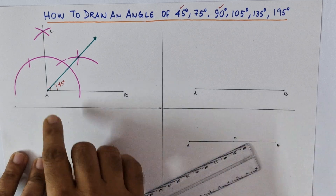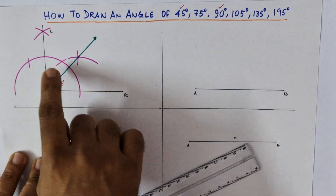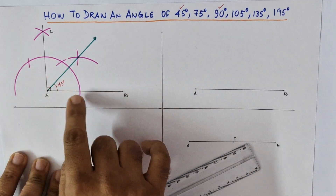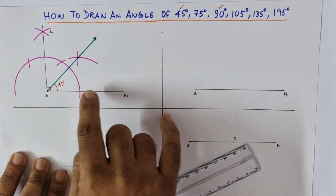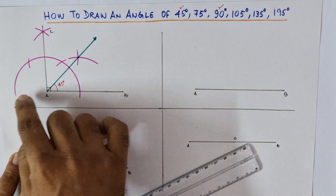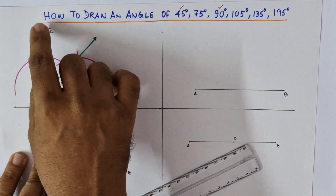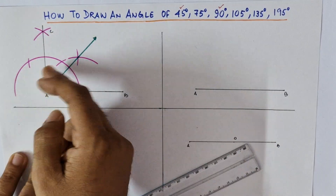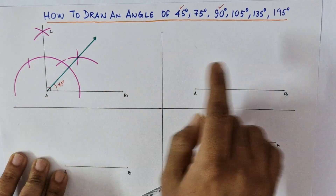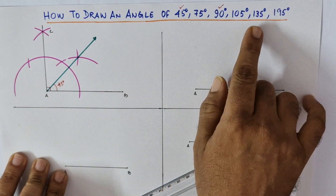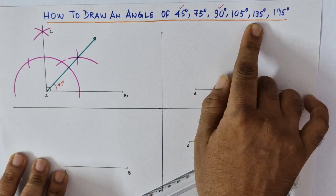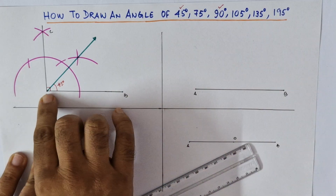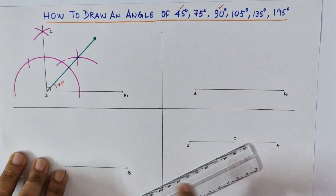Now see, this is a 90 degree angle. If I add 45 degrees to this 90 degrees, what will we get? We will get 135. So let's extend this line.